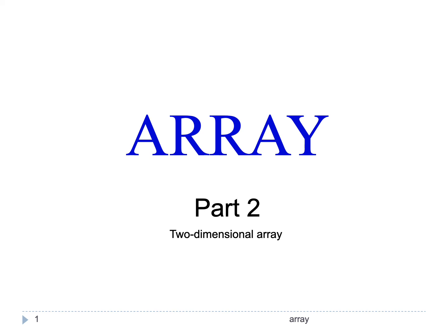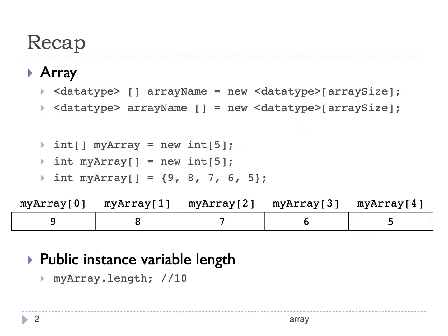Assalamualaikum and hi everyone. Let's continue with the second part of arrays, where we will look at the two-dimensional array. To recap, in the last part, we looked at how to declare and create an array by writing the data type, then the square brackets after the data type or after the array name, equal to new data type and the size of the array within the square brackets.